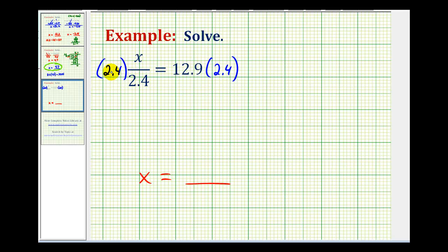So notice on the left side of the equation, we have 2.4 divided by 2.4. So this simplifies to one x, or just x. And then on the right side, we have 12.9 times 2.4. Let's set this up over here. So here, 12.9 times 2.4.